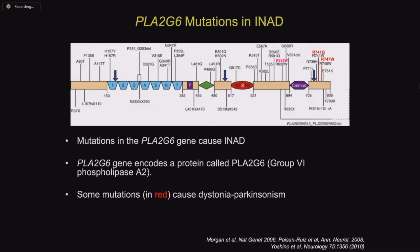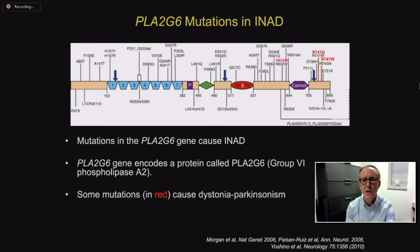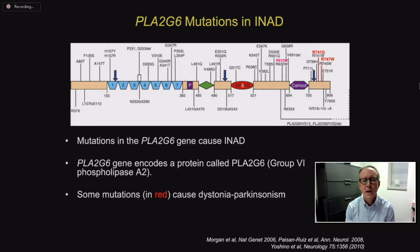Here's a diagram of the PLA2G6 gene, and most people know that mutations in this gene cause INAD. The gene encodes a protein also called PLA2G6, but it's been known by other names, including group 6 phospholipase A2. A variety of different mutations have been found in children with INAD, ranging from single misspellings in the gene to mutations that essentially stop the ability to produce protein from the gene. There are also a few mutations in red that cause dystonia Parkinsonism, which I won't talk about today.